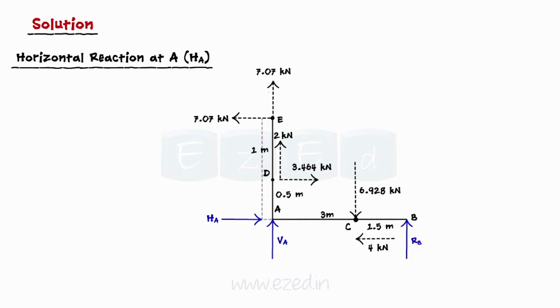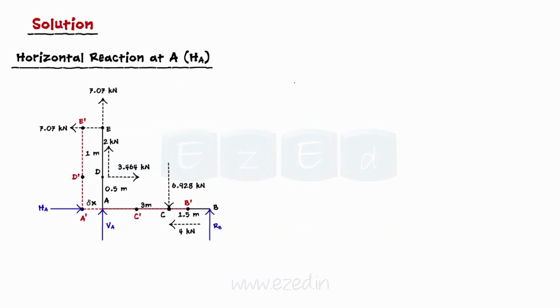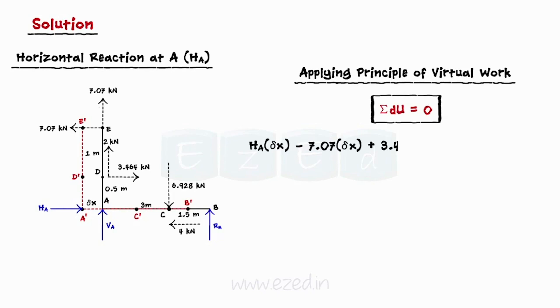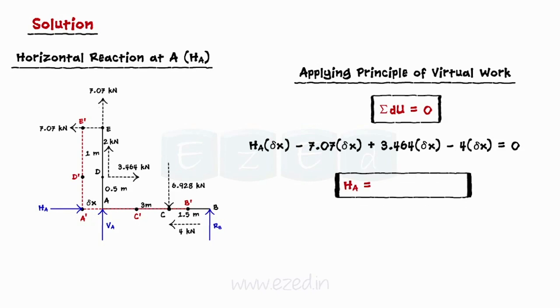Next, we will find the horizontal reaction at point A. We will now impart a small virtual horizontal displacement delta x about the x-axis as shown in the figure. Applying the principle of virtual work, we get summation dU = 0. On substituting the forces and their virtual horizontal displacement delta x and then simplifying, we get the horizontal reaction at A equal to 7.563 kN acting to the right.